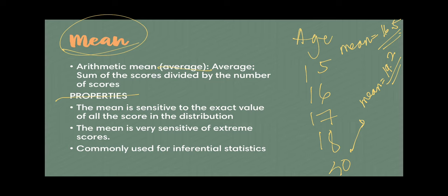The mean is very sensitive to extreme scores. As we've seen in the context of income distribution in a given country, especially countries that are very unequal like the Philippines. However, mean is still what we mostly use in the social and behavioral sciences because it's what we use mostly for hypothesis testing. Mean is where we'll be going in terms of inferential statistics.